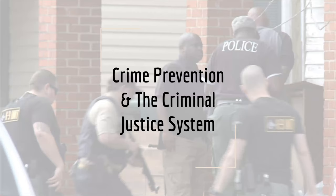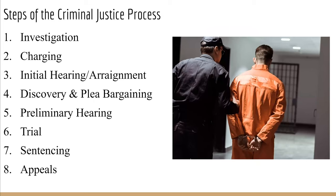The last thing we're going to talk about today is crime prevention and the criminal justice system — specifically the process. There are eight steps in the criminal justice system, which we call due process of law. Due process is about the rights of the accused: things the government must do to satisfy the law. As an American citizen, they have to go through all these steps to prove your guilt, and you do not have to prove your innocence — you must be found guilty beyond a reasonable doubt.